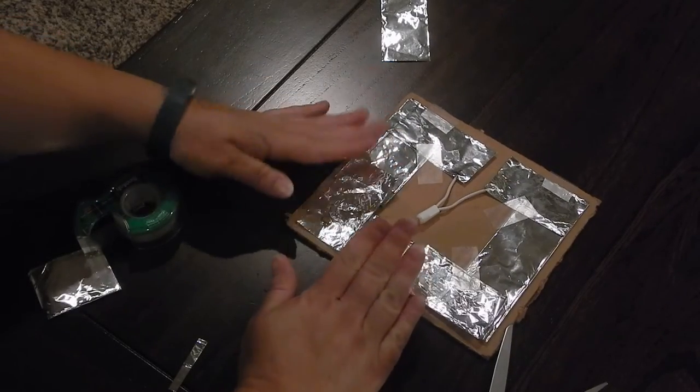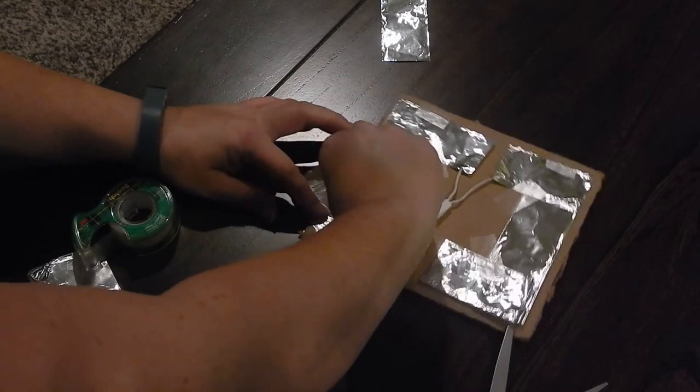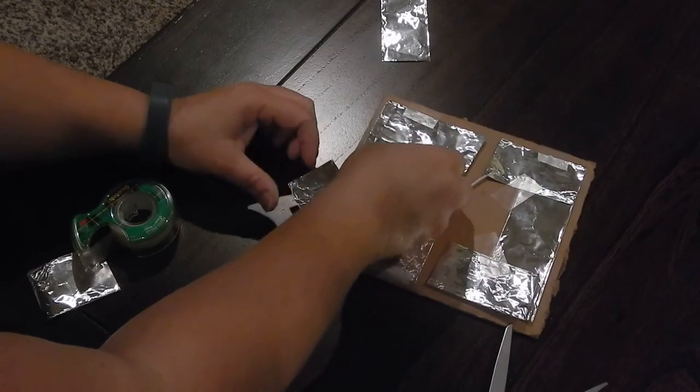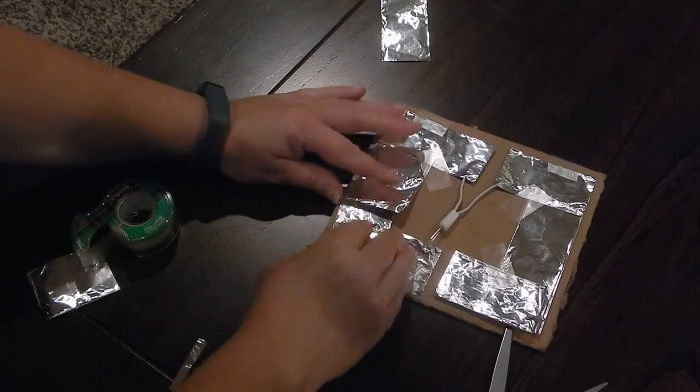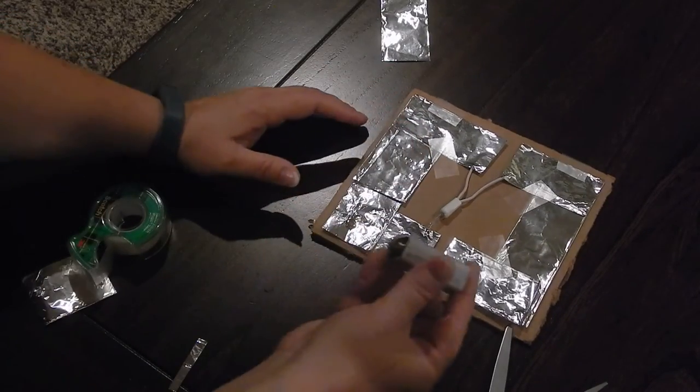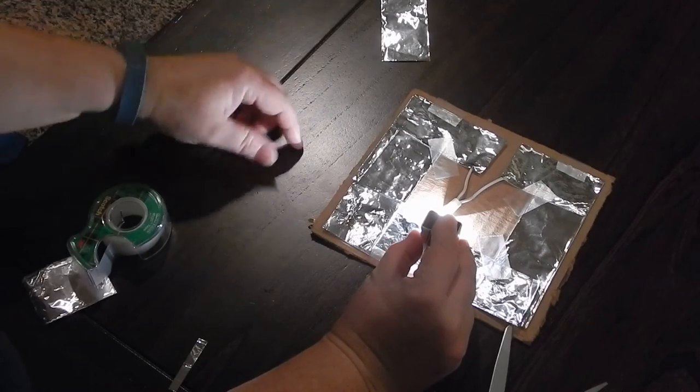So now we are going to test our circuit. You can either have the switch on the top. I like putting it on the bottom because then I can guarantee that my conductors are touching. And we are going to test it out to make sure that we made a complete circuit. We made a complete circuit.